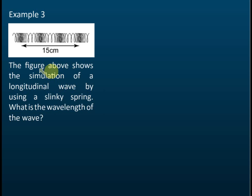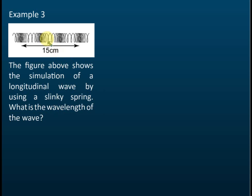The figure shows the simulation of a longitudinal wave using a slinky spring. What is the wavelength of the wave? This is a longitudinal wave with compressions and rarefactions alternating. From one compression to the next compression is 15 cm.